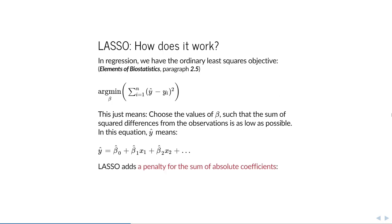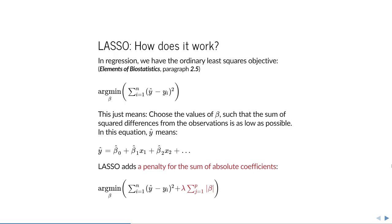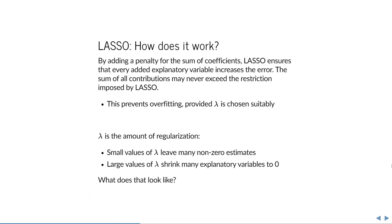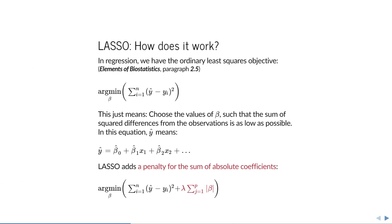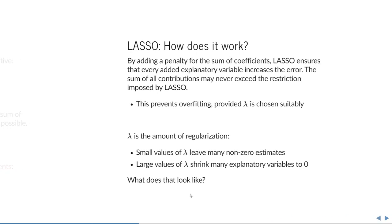By adding a penalty for the sum of coefficients, lasso ensures that every added explanatory variable increases the overall error, so the sum of all contributions can never exceed the restriction imposed by lasso. This prevents overfitting, provided we choose the right lambda. Lambda controls the amount of regularization: small values of lambda leave many non-zero estimates, while very large values of lambda shrink many variables completely to zero.